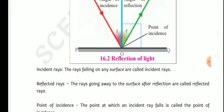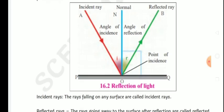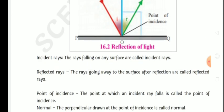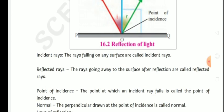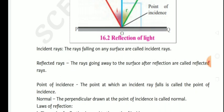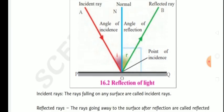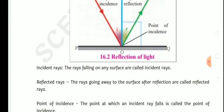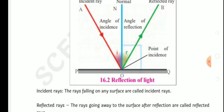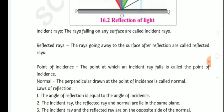Normal means: in this diagram, N-O is the normal. The perpendicular drawn at the point of incidence is called the normal. Normal means it is a perpendicular — a vertical line to the mirror. This ray is drawn at this point in the diagram — N-O is the normal.